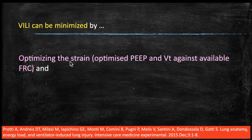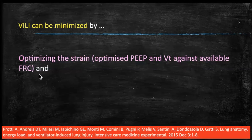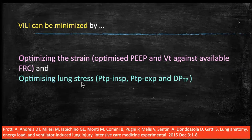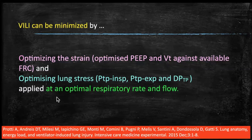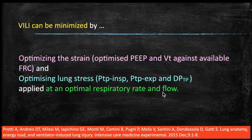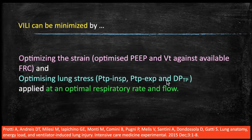Ventilator-induced lung injury can be minimized by optimizing strain — that is, optimizing PEEP and tidal volume against available functional residual capacity. It can also be reduced by optimizing lung stress — that is, inspiratory trans-pulmonary pressure, expiratory trans-pulmonary pressure, and trans-pulmonary driving pressure. These concepts of stress and strain optimization must be applied at an optimized respiratory rate and flow, involving many pressure and non-pressure parameters.